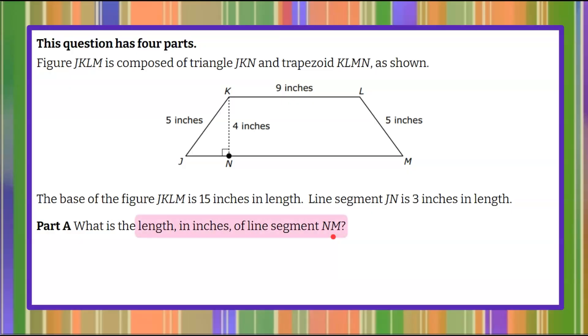So we're going to identify the length in inches of line segment NM which is right here NM and we want to know its length. In the original figure we're told that the base of JKLM is 15 inches so the entire figure JKLM is this entire image figure. So from J to M is 15 inches. It really helps to label this when you have it. Looking at line segment JN they're telling us that that's three inches so JN is right here the base of this triangle. JN is 3.